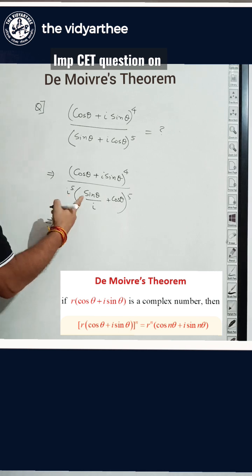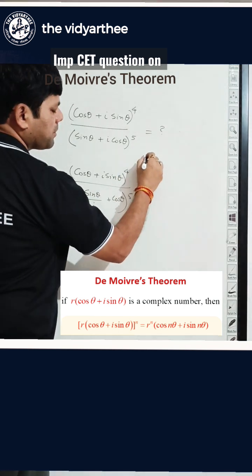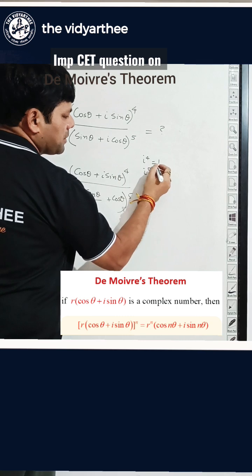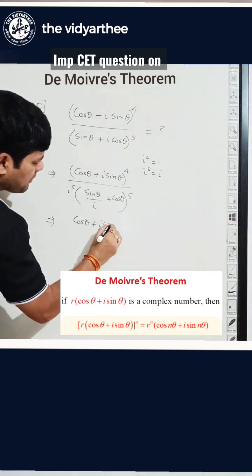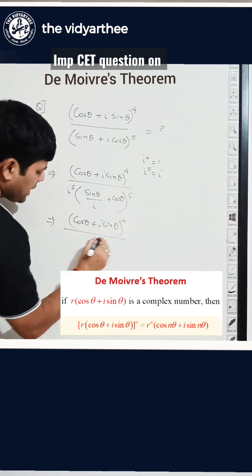Now next step. What is i power 5? Remember i power 4 is 1. So i power 5 will be i multiplied with this. So this will be i. So this becomes cos theta plus i sine theta power 4. Now I have an i here.